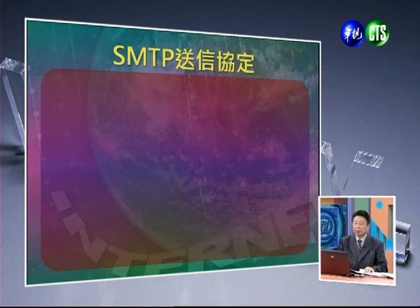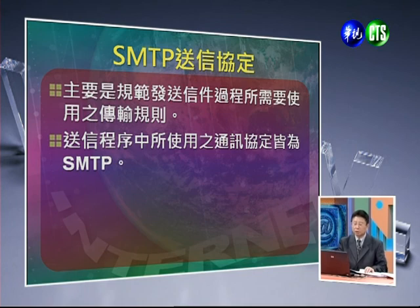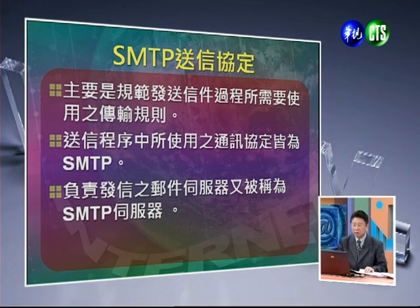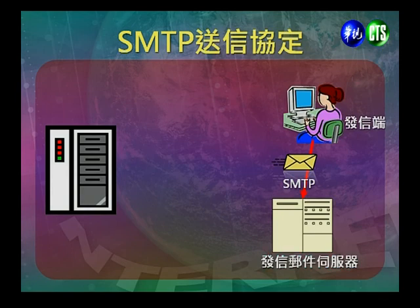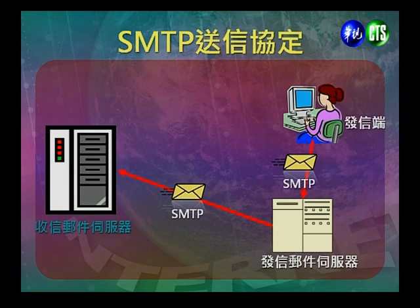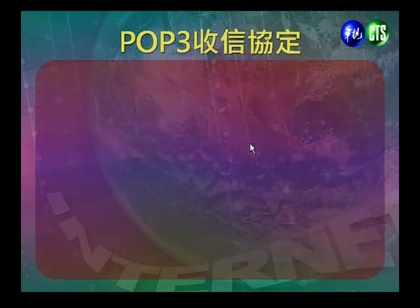接下来说明电子邮件传输的两种协定。第一个是SMTP（简易邮件传输协定），主要规范发送信件过程所需使用的传输规则，送信程序中所使用的通信协定都是SMTP，负责发信的邮件伺服器又称为SMTP伺服器。发信时，用户透过SMTP将信件传到发信邮件伺服器，再传送到收信邮件伺服器。